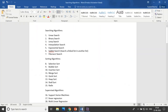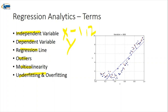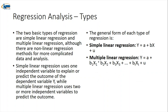Next is regression analysis — the seventeenth algorithm is linear regression. Before that, we should understand key terms: independent variables, dependent variables, regression lines, outliers, multicollinearity, underfitting and overfitting. The independent variable is X (input) and the dependent variable is Y (output). X can be 1, 2, 3, or n — there can be many independent variables.